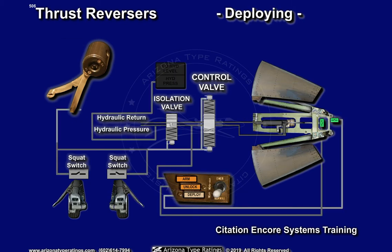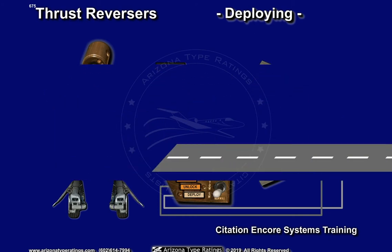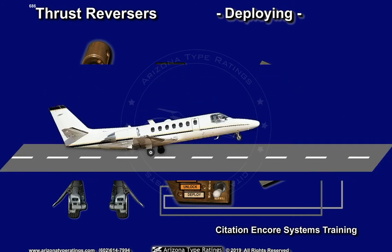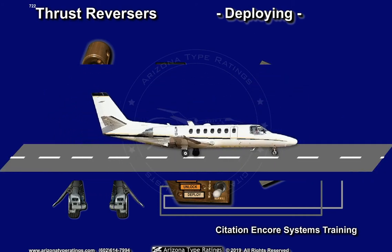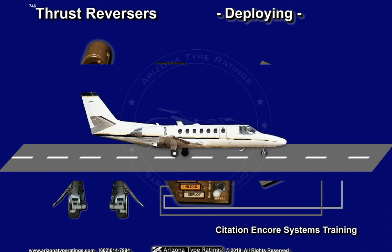When thrust reversers are not activated, the thrust reversers are held stowed by the over-the-center operation of the control bar mechanism. Either squat switch will enable reversers when in the ground position. The nose wheel must be on the pavement and forward pressure maintained on the control yoke to keep the nose gear firmly planted during reverser operation.